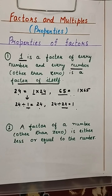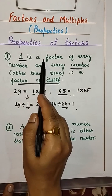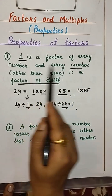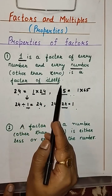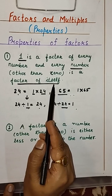Hello friends, in this video I am going to discuss properties of factors and multiples. Let us start with properties of factors. First property is: 1 is a factor of every number and every number other than 0 is a factor of itself.